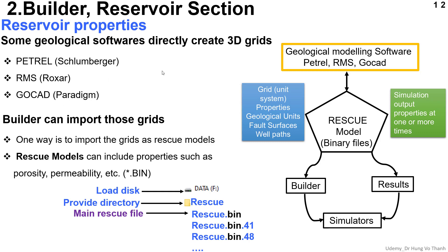How can you import the model from Petrel to CMG? You use the RESCUE model format. After you finish your model in Petrel, you click the export icon in Petrel, select the RESCUE model format, and Petrel will save that model in the RESCUE folder. Inside the RESCUE folder, there are a lot of RESCUE definition files, but you usually focus on the main RESCUE file. This is the main file for importing the Petrel model into CMG.